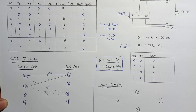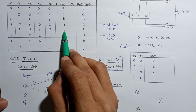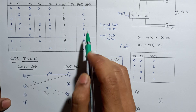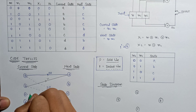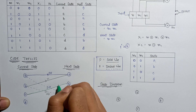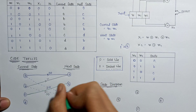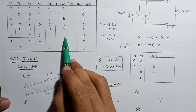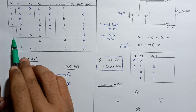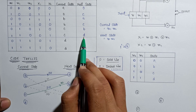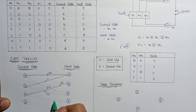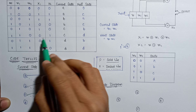Similarly, let's plot it for state C. If the current state is C and the input is 0, then the next state is B, and the output is 10. If the current state is C and the input message bit is 1, then the next state is D, and the output is 01.